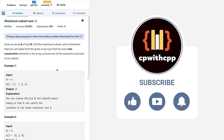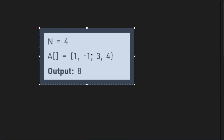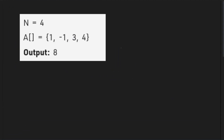Let us discuss the first sample test case. You can also interpret this statement as: there should be no two consecutive elements such that both of them are not taken. If I did not take this element, I will have to take the next element. Otherwise, it is not a valid configuration.